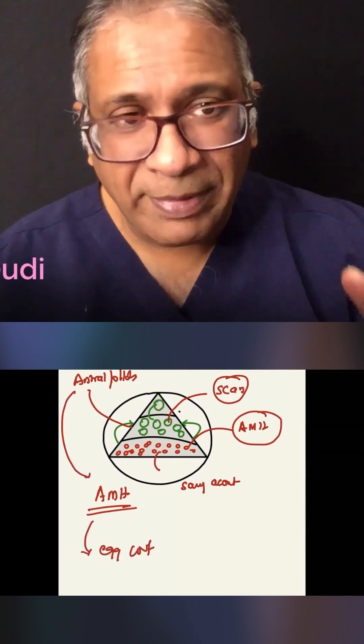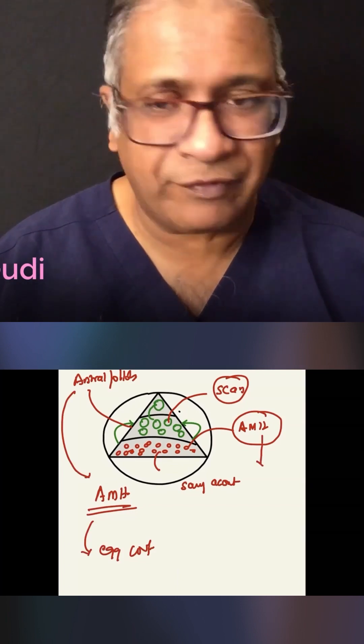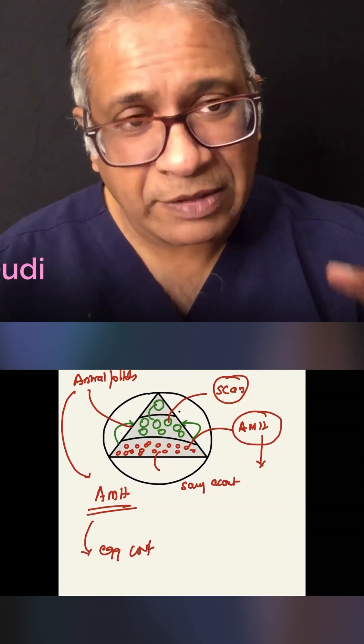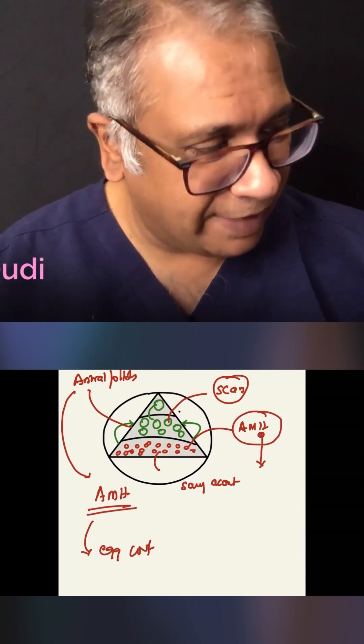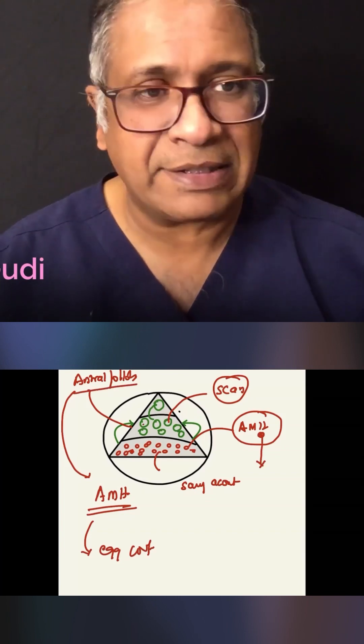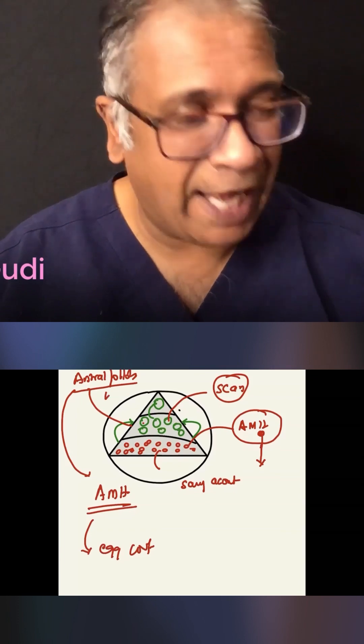So as women get older, what goes down first? The AMH declines first. So the woman is more likely to lose her AMH first and then her antral follicles. So there are some women who will have a low AMH but a good antral follicle count.